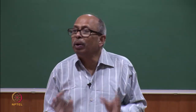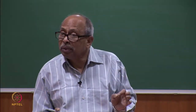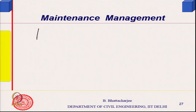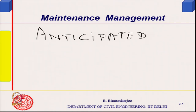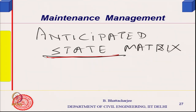You have to collect and record data. That is why it is very important in building maintenance management to keep records of when you have done what. We define something called the anticipated state matrix. To build this, first you should define the states themselves.